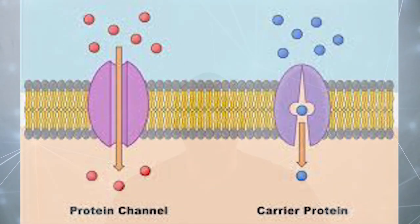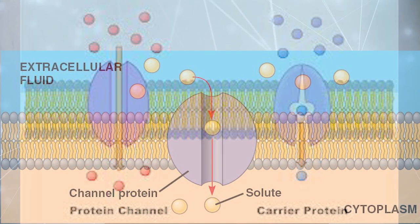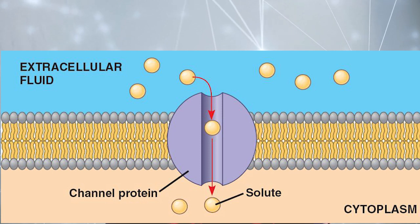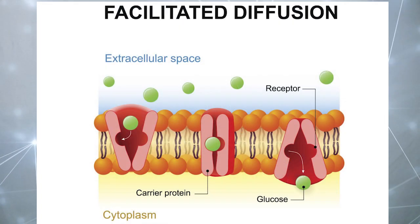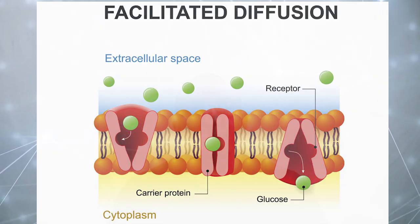Facilitated diffusion is a type of passive transport that moves larger and or polar molecules across the cell membrane with the help of transport proteins. The transport proteins are embedded throughout the cell membrane and have a binding site where a specific molecule or ion can be transported across. An example of facilitated diffusion is transporting glucose across the cell membrane. Since glucose is a polar molecule, it requires the use of transport proteins to get across the cell membrane.